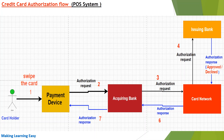The acquiring bank validates the request, and if everything is fine, it forwards the request to the card network. Different cards have different card networks — for Visa we have the Visa card network, for Mastercard we have the Mastercard network, and for American Express we have a different card system. The acquiring bank identifies which card network to send the request to by looking at the first digit of the credit card number, and then forwards the request to the corresponding card network.